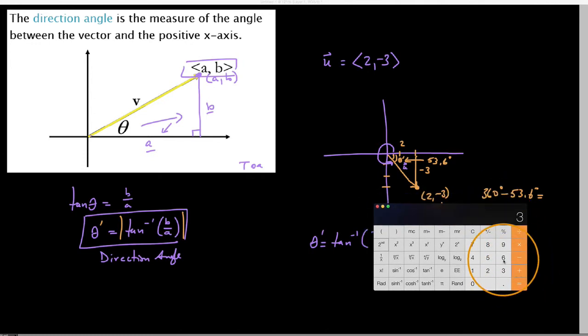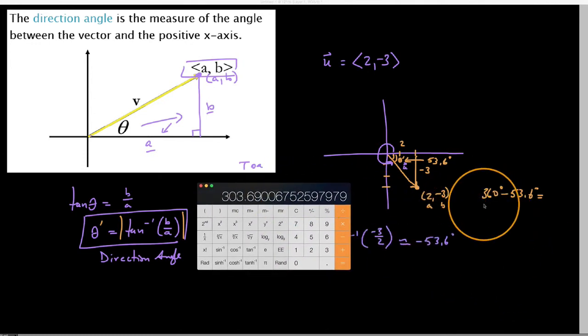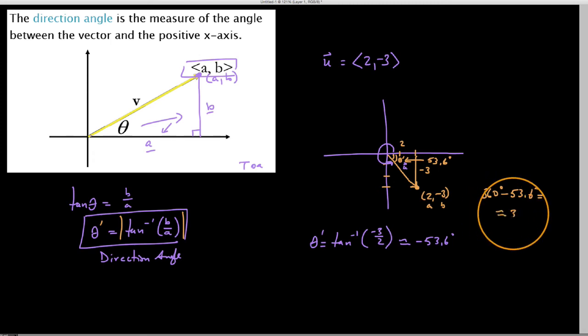So I'm just going to add 360 to this number. And we get 303.7-ish. So approximately 303.7 degrees. This is our direction angle for this vector. Cheers.